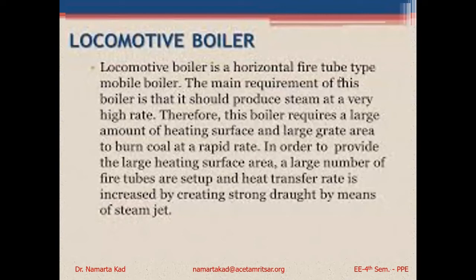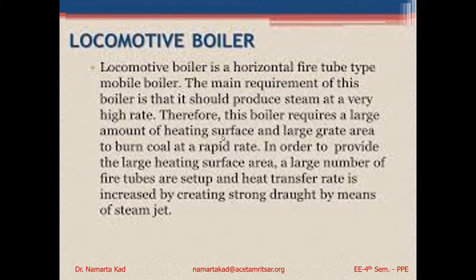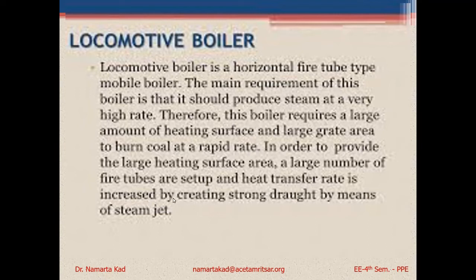The locomotive boiler is a horizontal fire tube, mobile boiler. Unlike the Cochran and Babcock Wilcox boilers which are fixed at a location, locomotive boilers are movable — they can move from one place to another. To produce steam at a very high rate, this boiler requires a large heating surface and large grate area to burn coal rapidly. A large number of fire tubes are used, and heat transfer is increased by creating an artificial draft through a steam jet.